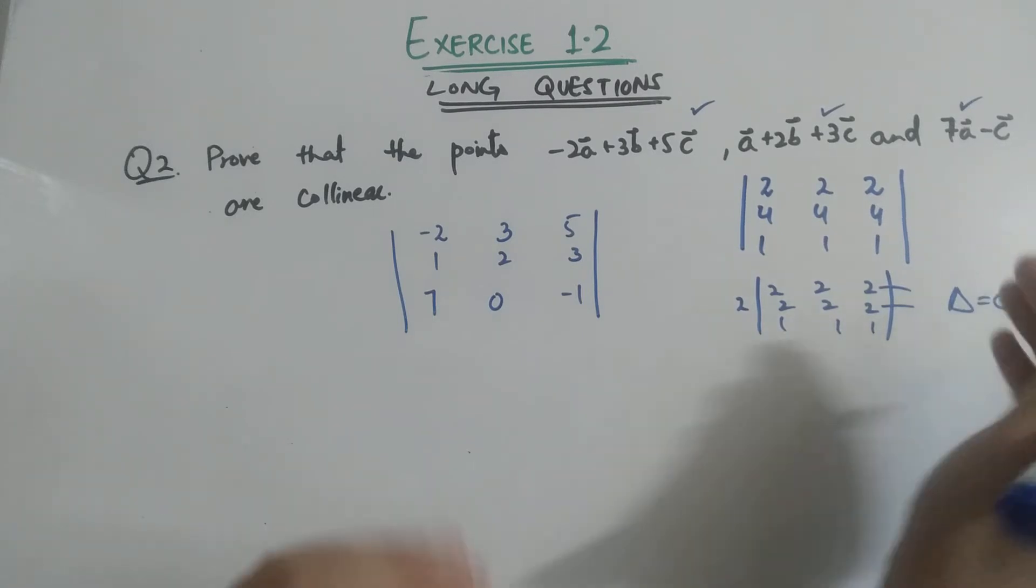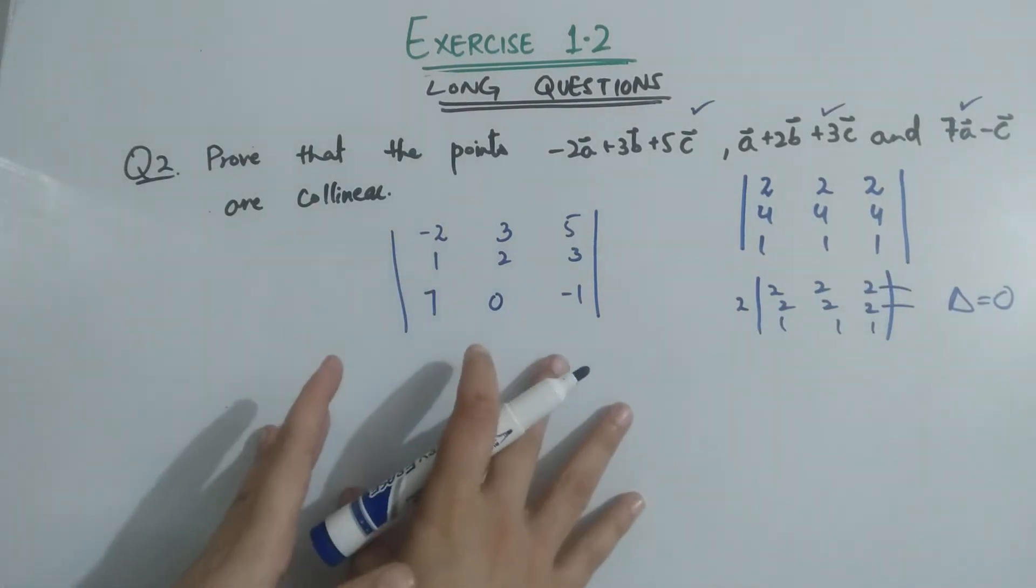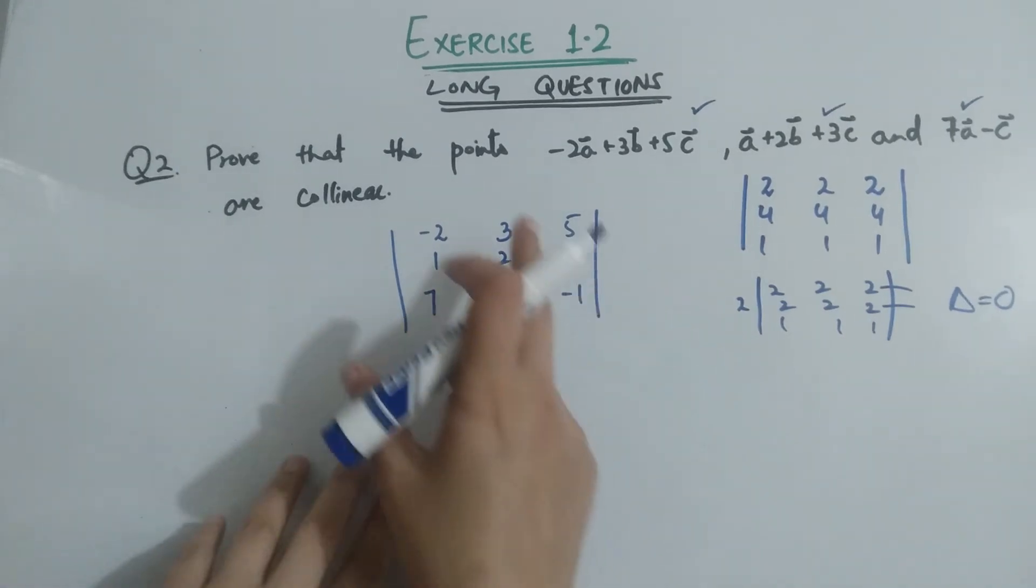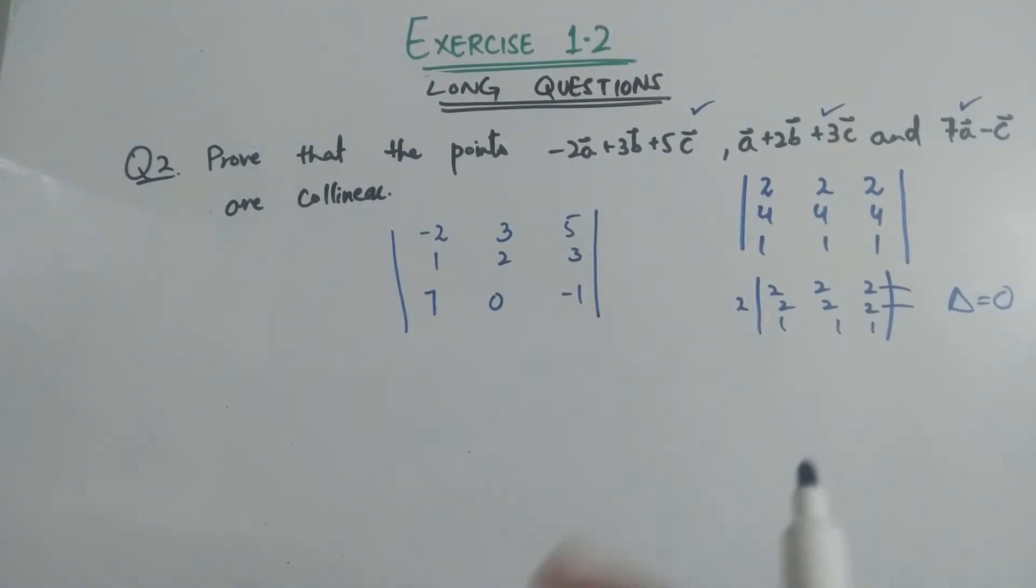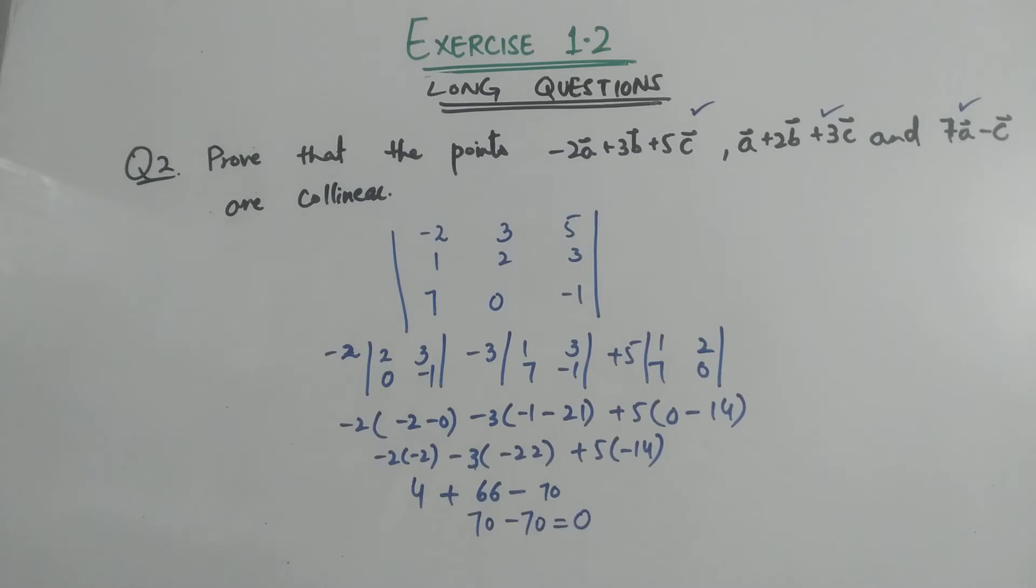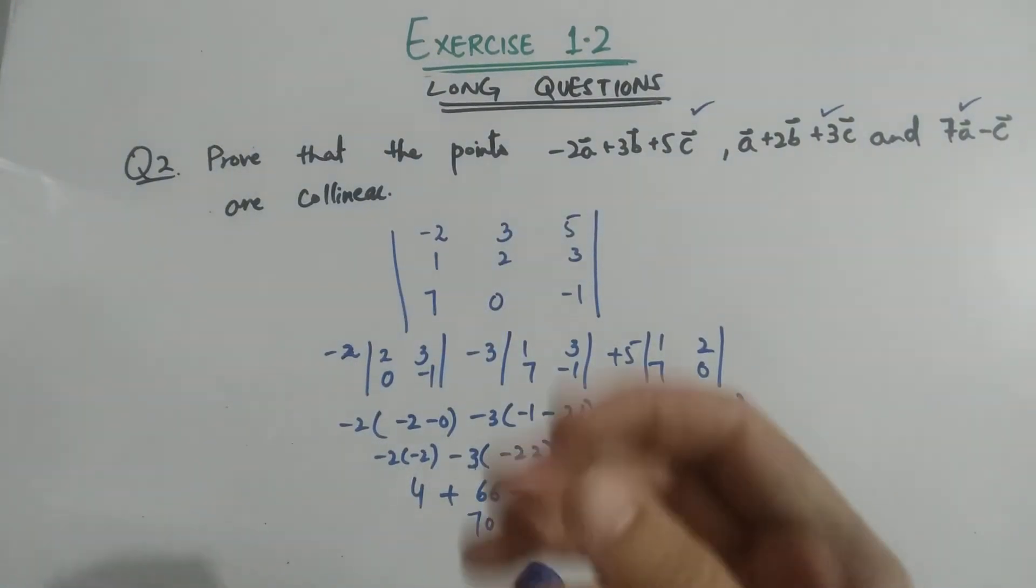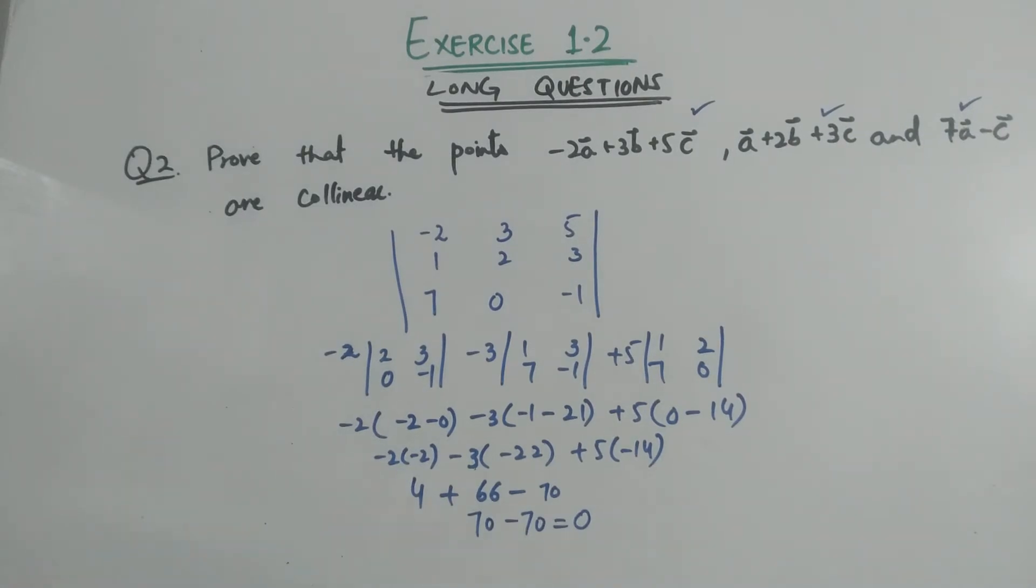So we use this property for collinear vectors - if the determinant is zero, then the vectors are collinear. This is the concept. After expanding the determinant, you will get the answer zero. Hence proved that these three vectors are collinear. This is a simple trick to prove collinear and coplanar.